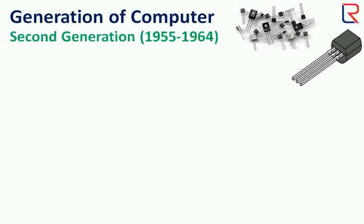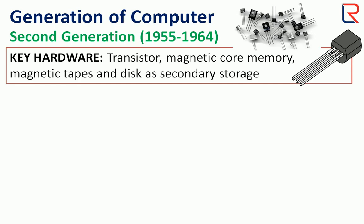Let's see the second generation. The period is 1955 to 1964. Vacuum tubes were replaced by transistor. Key hardware includes magnetic core memory, magnetic tapes, and disks as secondary storage.